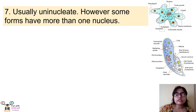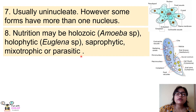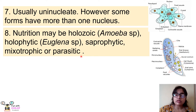In Paramecium, one nucleus is large — called the macronucleus — and the other is small — called the micronucleus — so Paramecium is multinucleate. Most protozoans are uninucleate, meaning they have one nucleus. However, some protozoans, like Paramecium, have more than one nucleus.